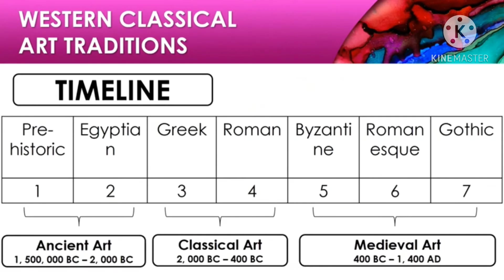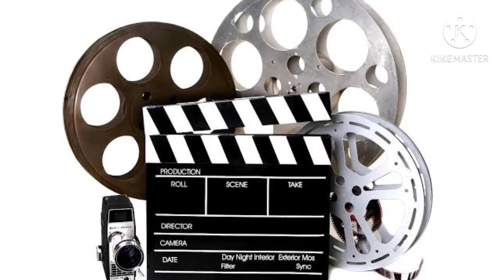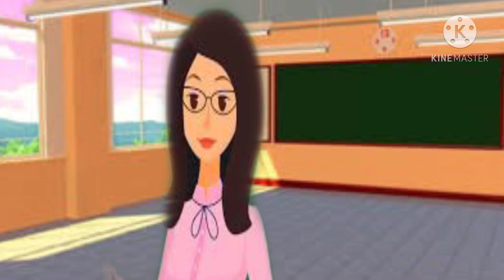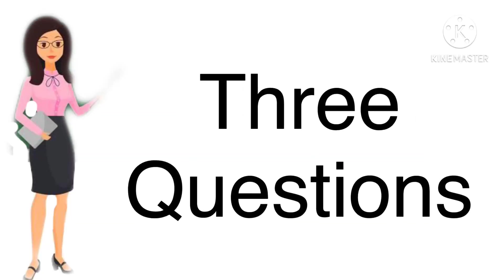Now that we've covered the elements and principles of arts and design, here is the Western Classical Art Tradition timeline and an overview of our lesson. Under the ancient period we have the prehistoric and Egyptian period. Under classical art we have the Greek and Roman. For medieval art we have the Byzantine, Romanesque, and Gothic. Art is the expression of ideas and emotion through a physical medium like painting, sculpture, film, writing, theatre, photography, or dance. Please take note of these three questions you will be answering at the end of the discussion.